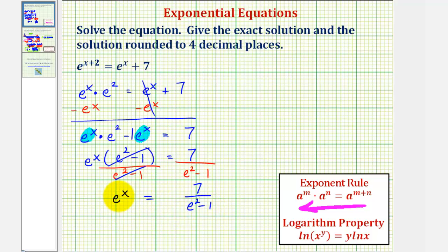Now that we have the exponential term isolated, we can take the log of both sides, apply the power property of logarithms, and then solve for x. Because we have base e here, let's use natural log instead of common log. So we'll take the natural log of both sides.